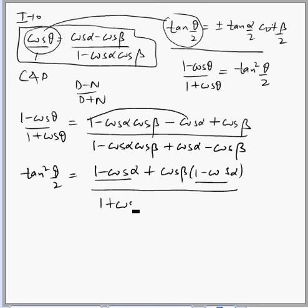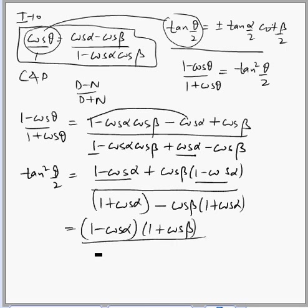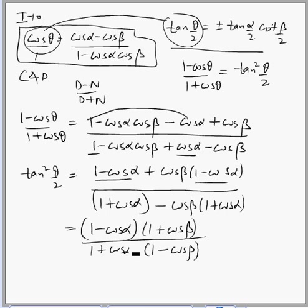Similarly in the denominator we can write 1 plus cos α — by combining the first and third terms — and from the remaining terms we can take minus cos β common to get 1 plus cos α. So the numerator is factorized as (1 minus cos α)(1 plus cos β) and the denominator is factorized as (1 plus cos α)(1 minus cos β). And using the same trigonometric formula, the numerator factor gives tan²(α/2).